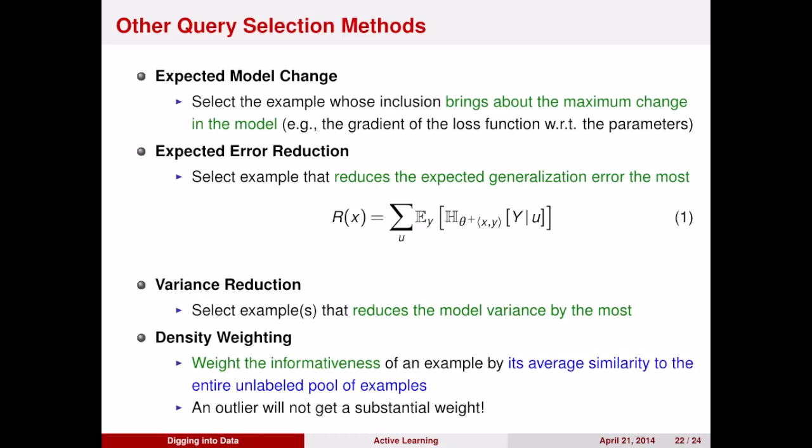Finally, another way to avoid the problem of outliers is weighting your examples with respect to density. That is, you want to choose examples that are similar to the entire unlabeled pool of examples. That is, you want to weight things in terms of typicality. And you can combine this with other metrics to give you things that are both typical and informative.